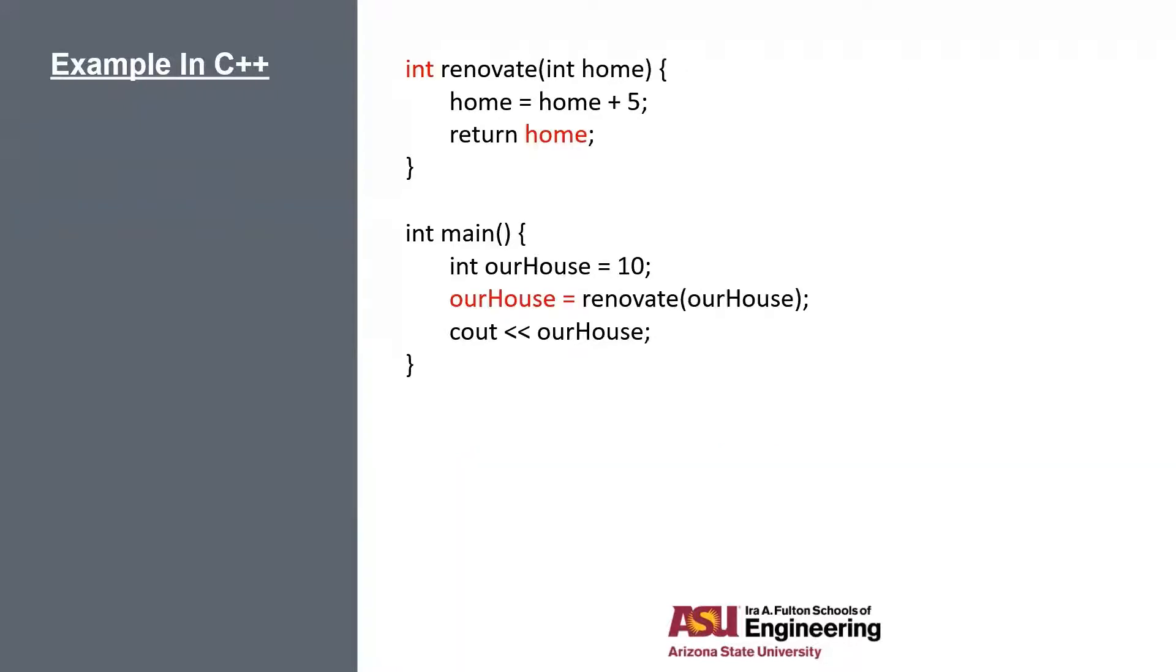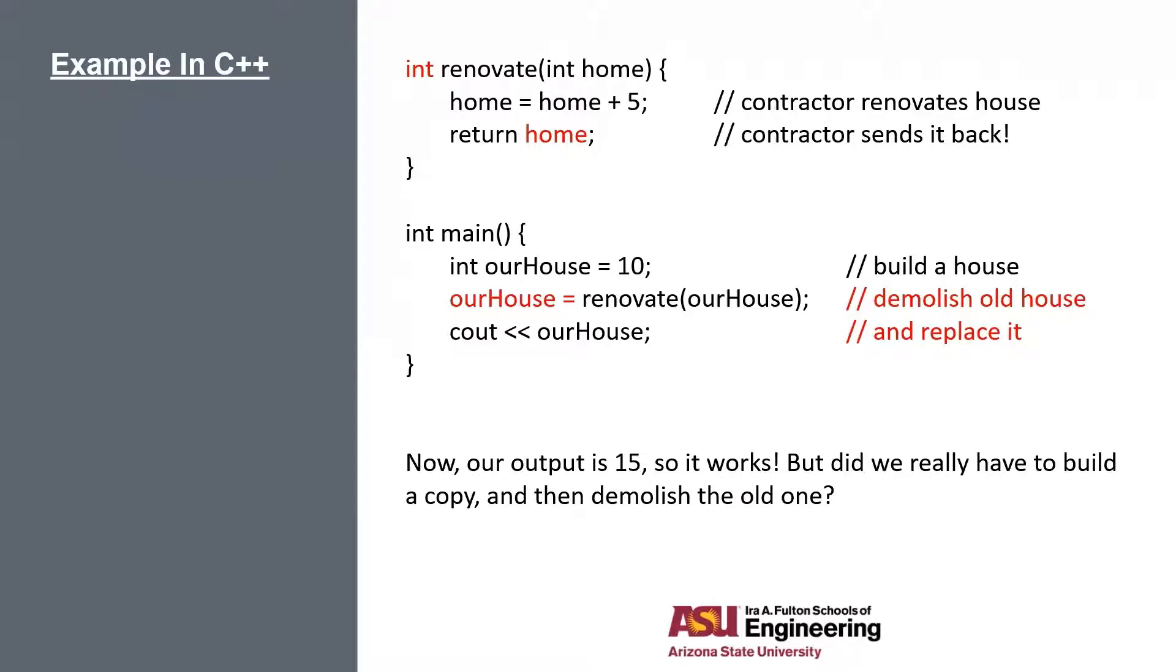So let's actually fix this up a little bit so at least we can get a new house with renovations. Let's start in the main function and build our house, initialize it to a value of 10, send it to our contractor, contractor renovates it, and then contractor sends it back. Now, since we got our new house back, we have to demolish our old one without the renovations and then replace it. At least now we do have a new house with new renovations, but did we really have to go and demolish the old one? And did we really even have to make a copy in the first place and send it all the way over to a contractor? That's a lot of extra work.